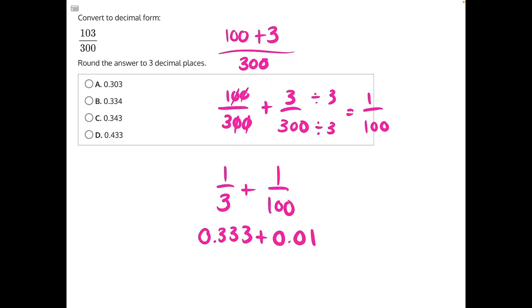If we add these two together, just make sure that you stack your decimal points correctly. And then we just add vertically. 3 plus 0 is 3, 3 plus 1 is 4, 3 plus 0 is 3, and then 0 plus 0 is 0. And that would give us our final answer of 0.343, answer choice C.